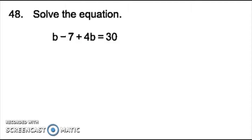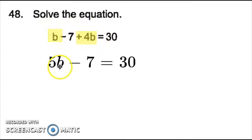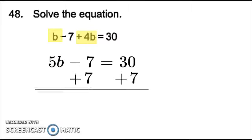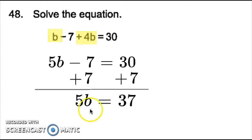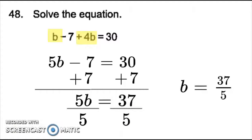For number 48, I again have a pair of like terms. So I combine my like terms and I get 5b, because this is a 1 in front and 1 plus 4 is 5. So I have 5b minus 7 equals 30. The opposite of subtracting, since 7 is being subtracted from 5b, is going to be adding. So I add 7 to both sides and I get 37. Since 5 is being multiplied to b, the opposite of multiplying is dividing. So I divide both sides by 5, and it can't be reduced, so my answer is going to be 37 over 5.